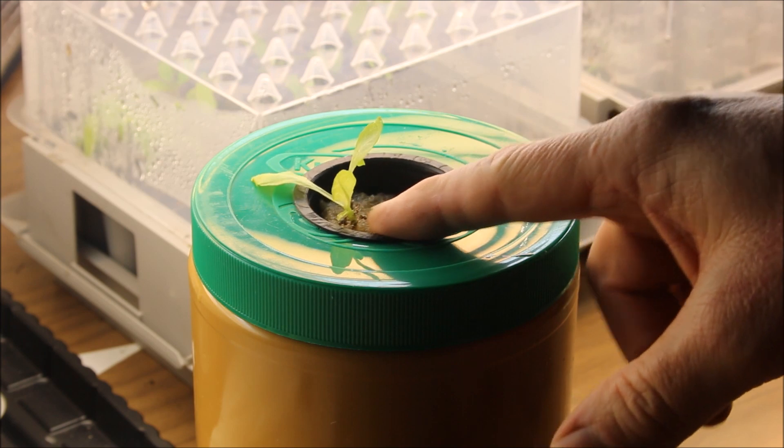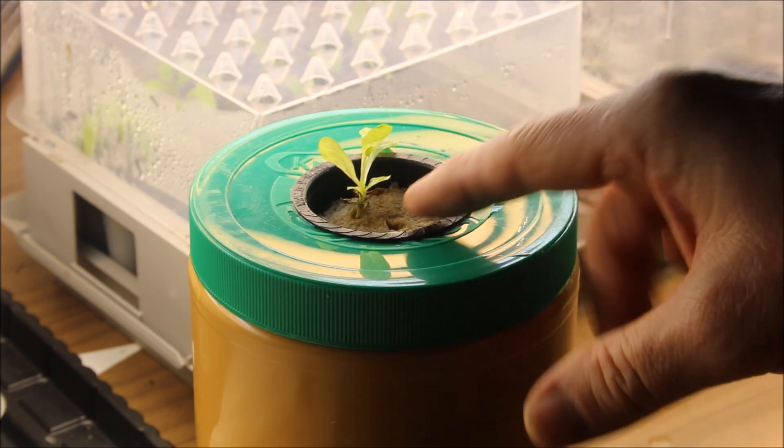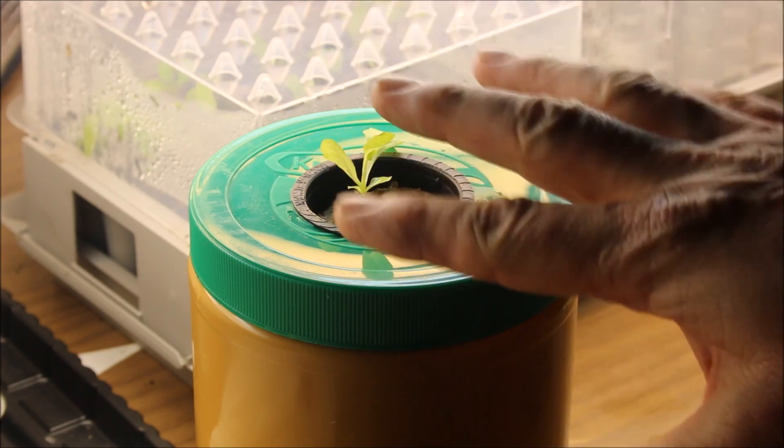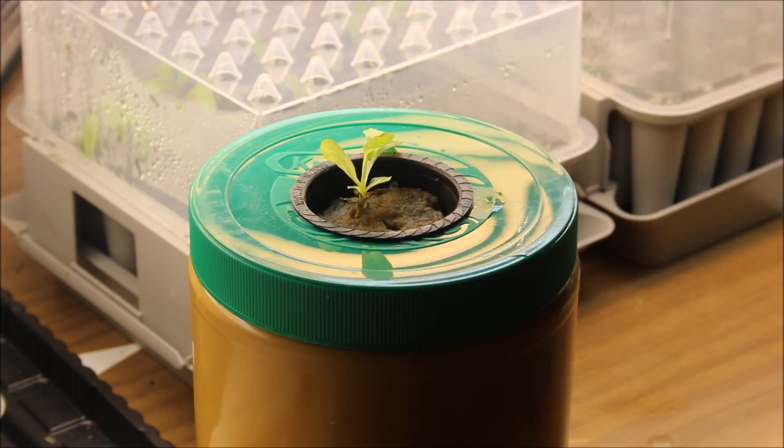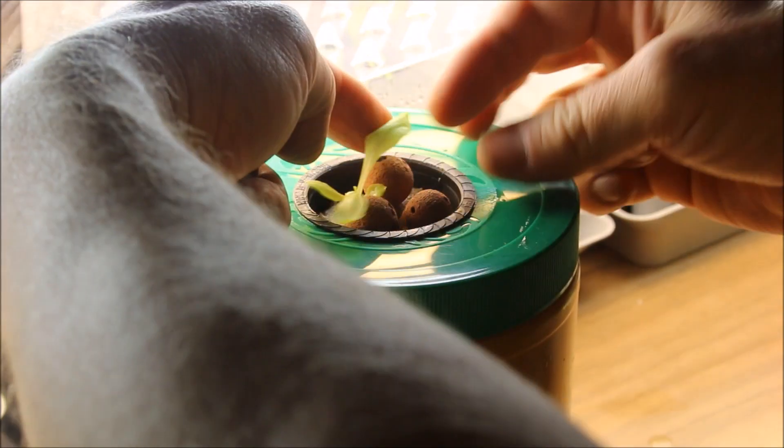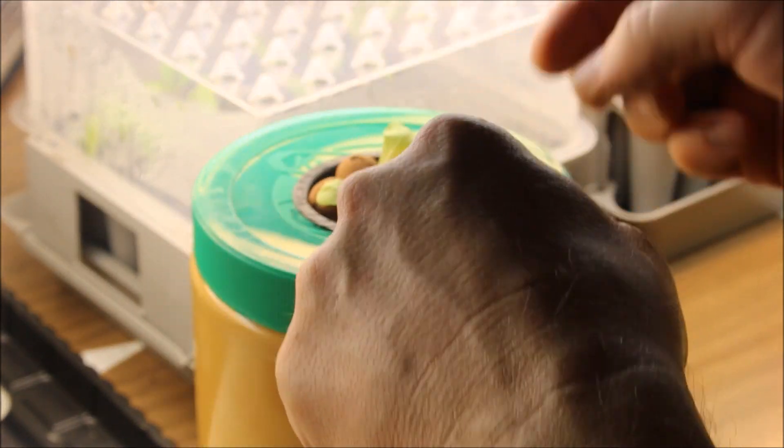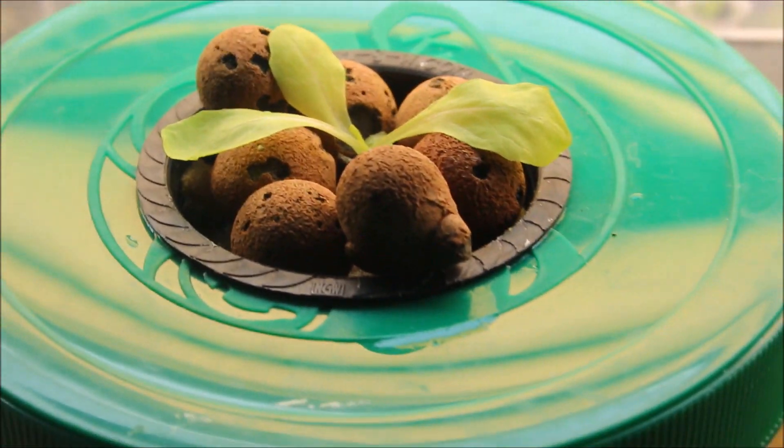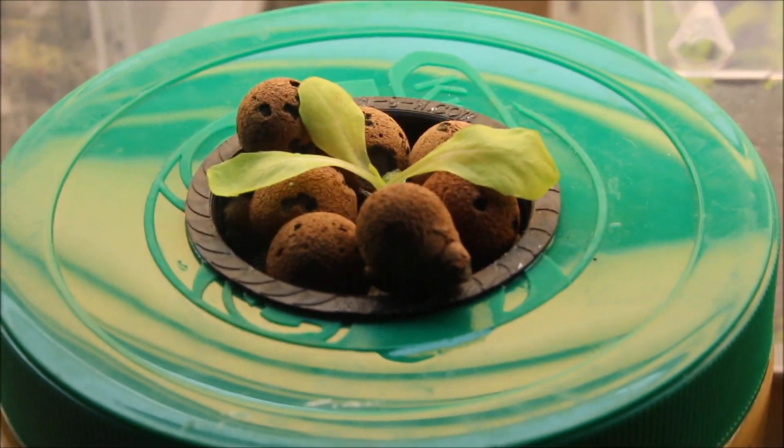And now what we'll do is we will put some clay pebbles around here which will help support this leaf up a bit and it'll also cut down on the algae that could form on top of the rockwool. And that's all we need to do. Now this will be placed under my lights and we'll come back and show you the progress.